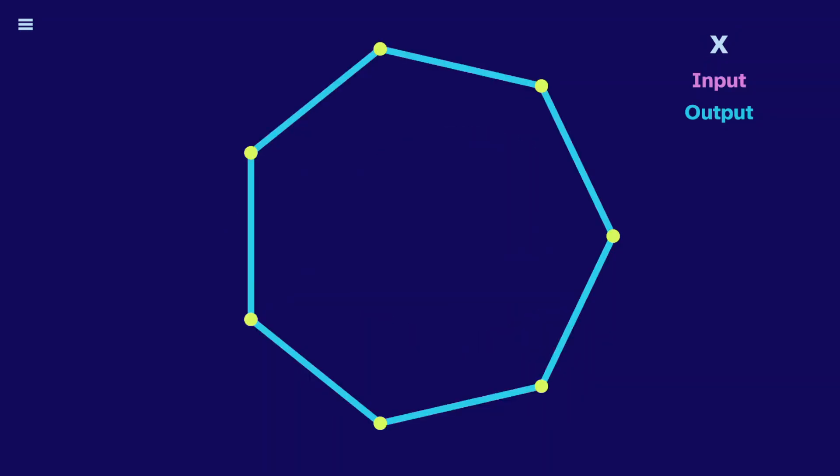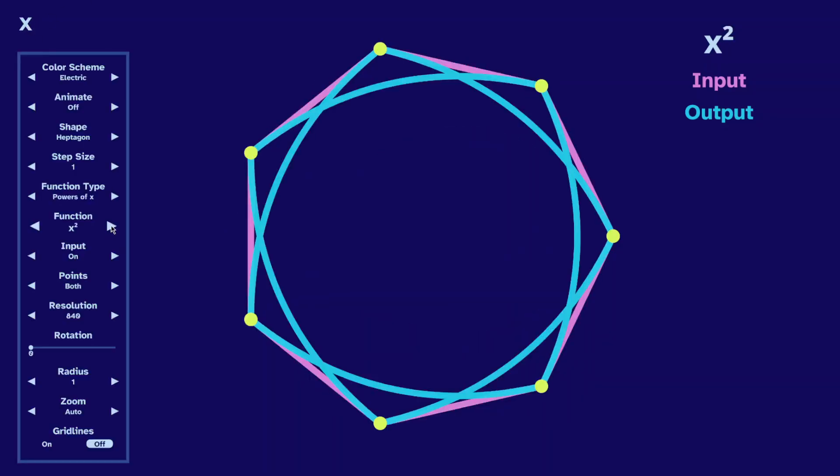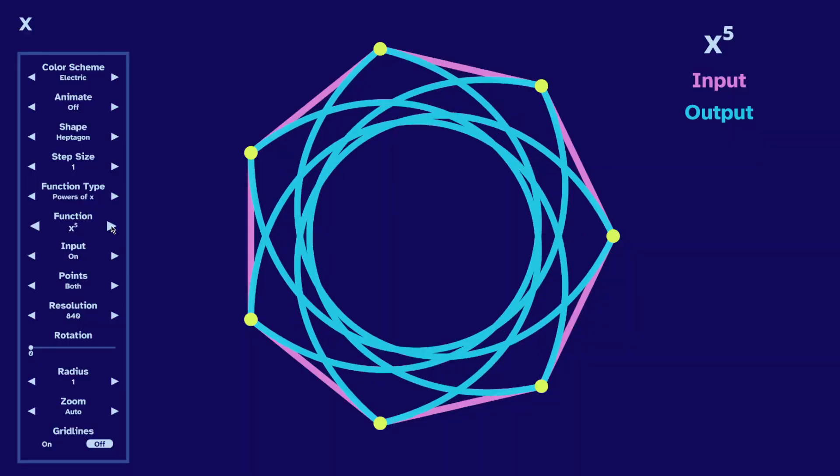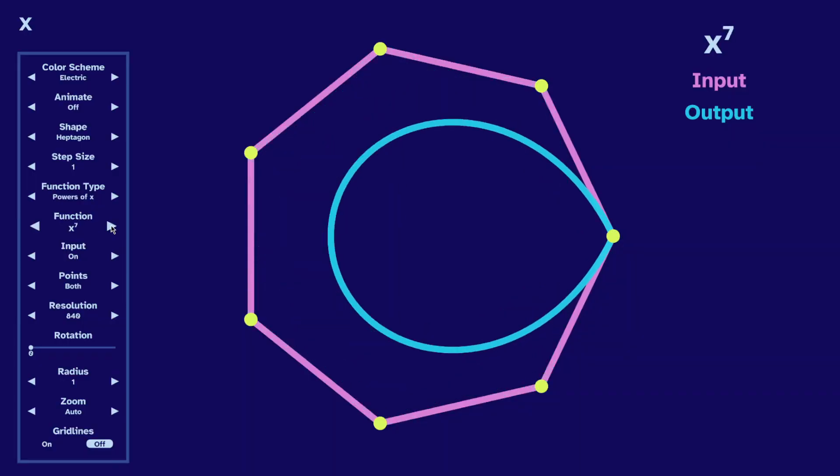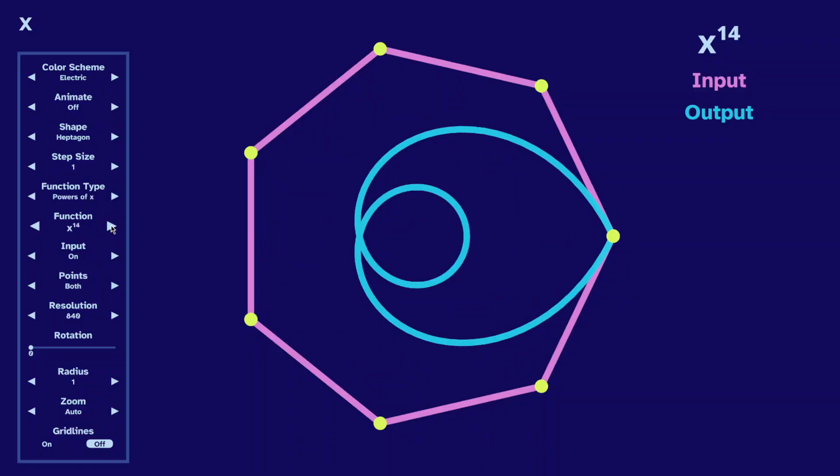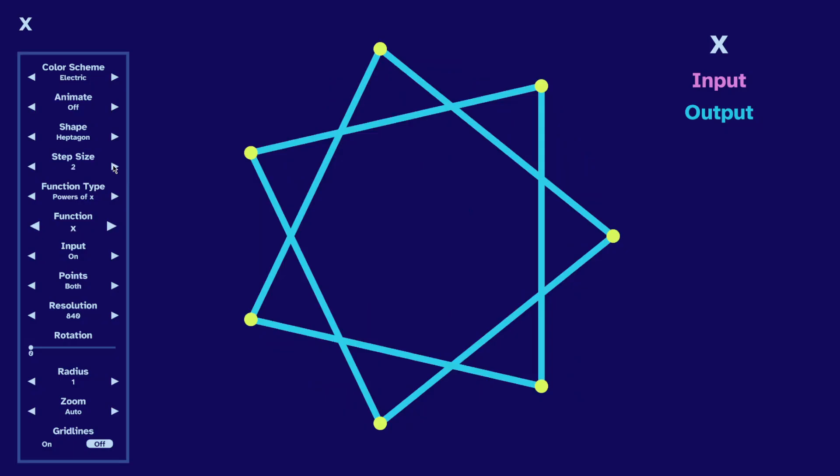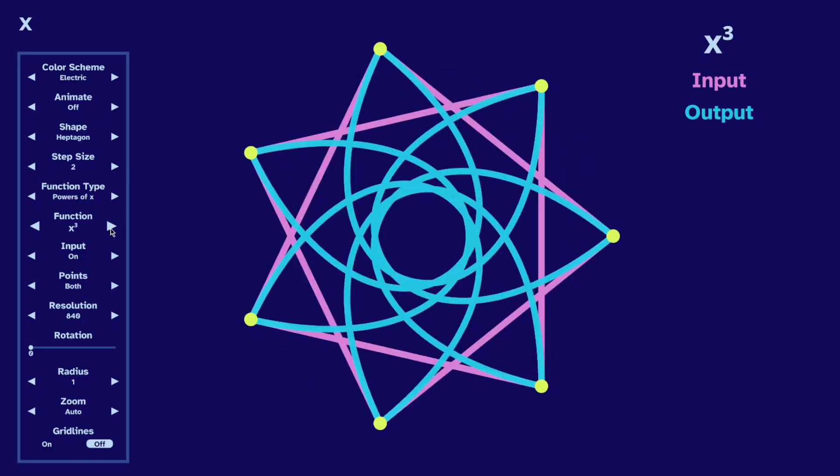A heptagon has seven points, which is prime. So we always hit every point, unless the power is seven, or a multiple of seven. Instead of a heptagon, let's use a seven-pointed star. We get a similar effect.